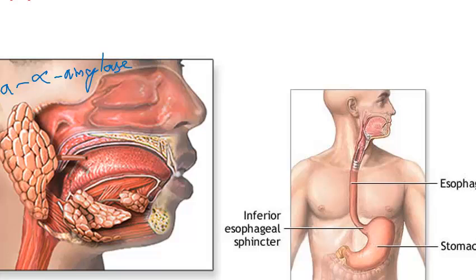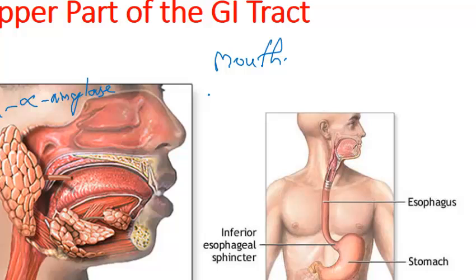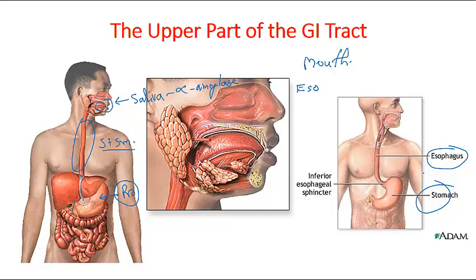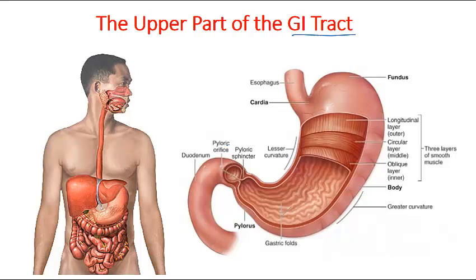The three major components of the upper GI tract are the mouth, esophagus, and stomach. Now let's talk a little bit about the stomach, which is one of the most important constituents of the alimentary canal.